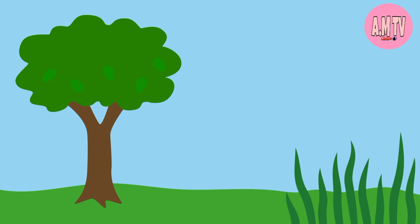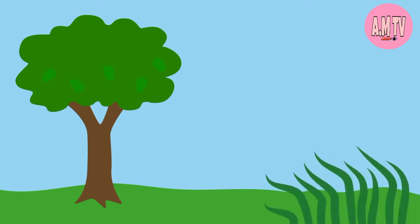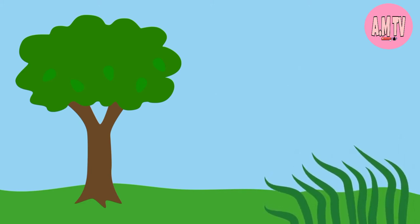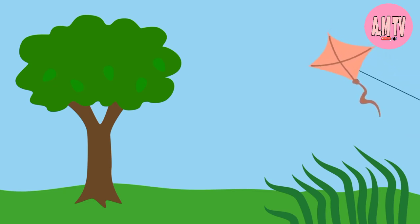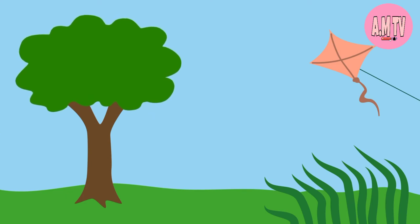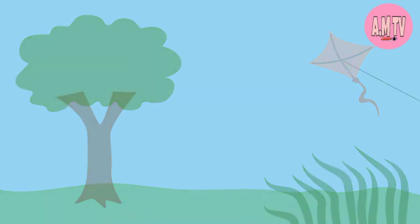The child can find things like grass moving, a kite flying, or leaves blowing. Doing this helps the child learn about wind, an important part of the weather, and how it affects things around them.